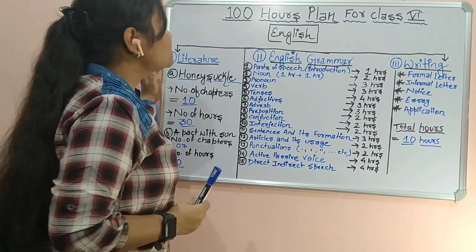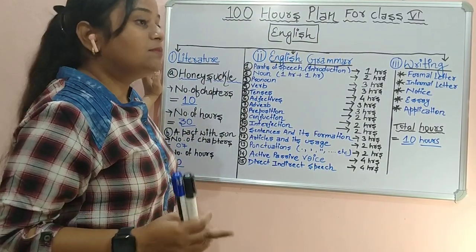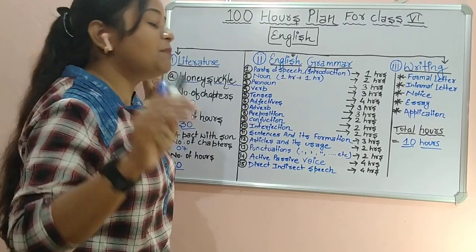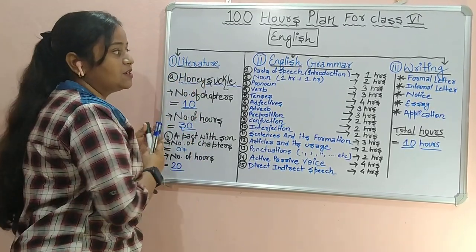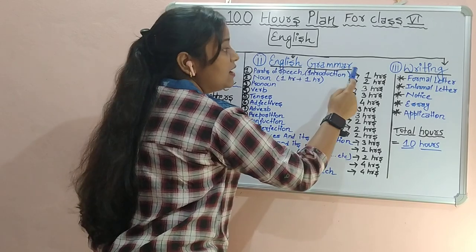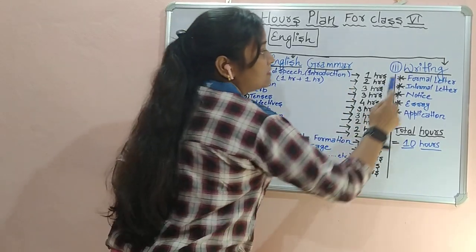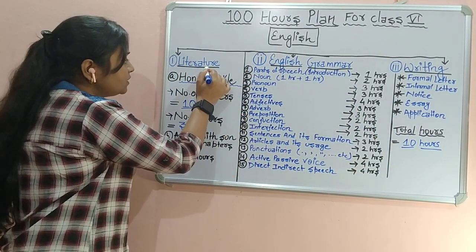Students, as we know, as per the CBSE curriculum, English has been divided into three parts. First part is Literature, second part is English Grammar, and the third part is Writing.